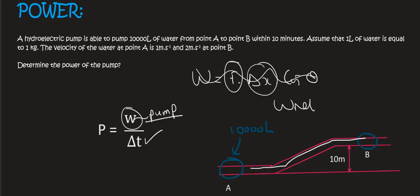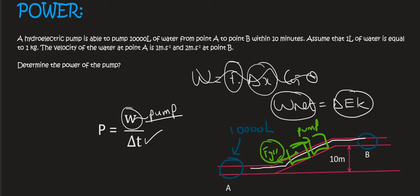W net equals change in ek. That can't be used because we know the change in the velocity, but w net, that's going to be the work on the water while it's busy going up, and so at any given moment that water is going to have fg parallel. There's no friction, so we're not going to take that into account, and then there's also going to be the force of the pump. But we can't get fg parallel because fg parallel is equal to mg sin theta and we don't have the angle of the slope.